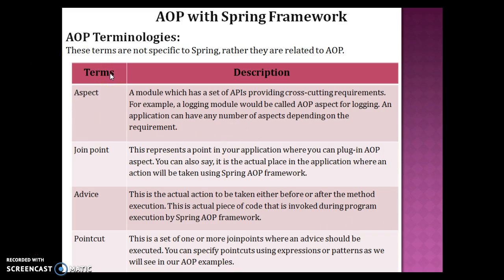AOP comes with its own set of jargons or terminology. These terms are not specific to Spring — they are related to Aspect Oriented Programming in general. The first terminology is Aspect. We can define an aspect as a module which has a set of APIs providing cross-cutting requirements. For example, a logging module would be called an AOP aspect for logging. An application can have any number of aspects depending on the requirement.